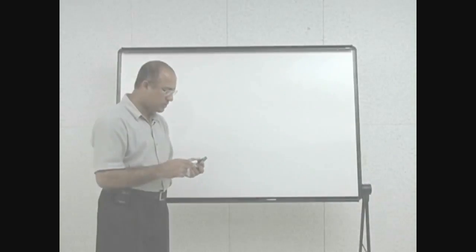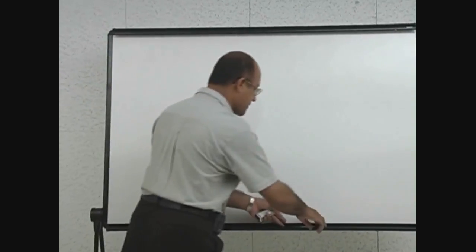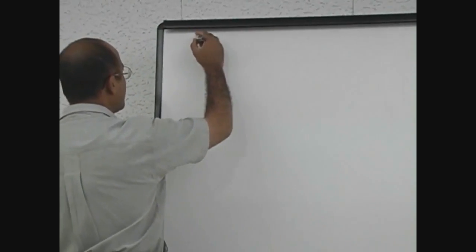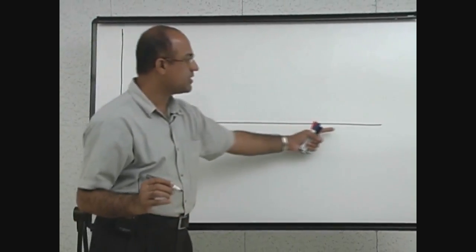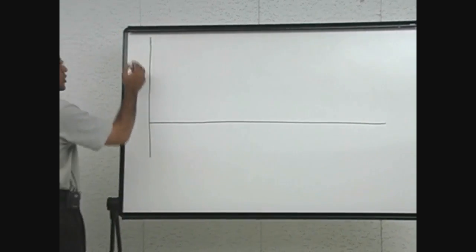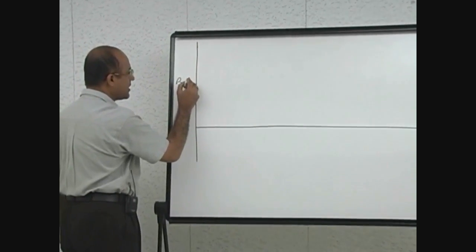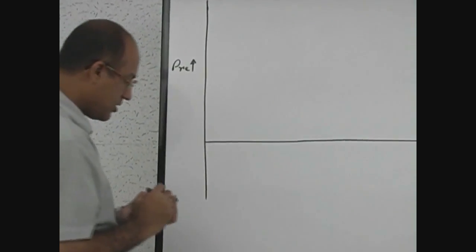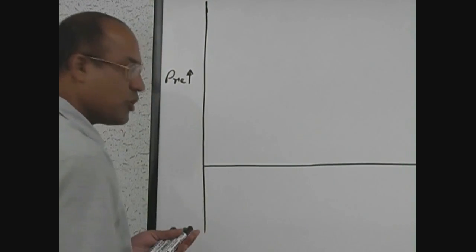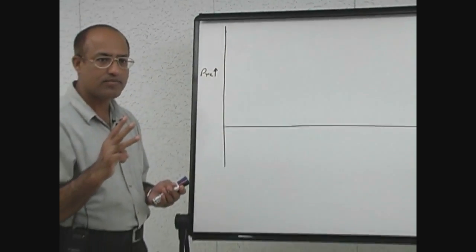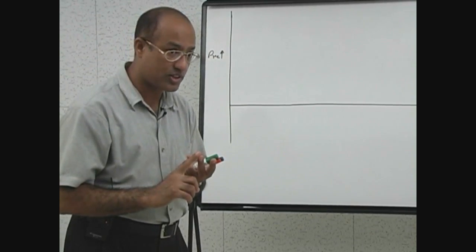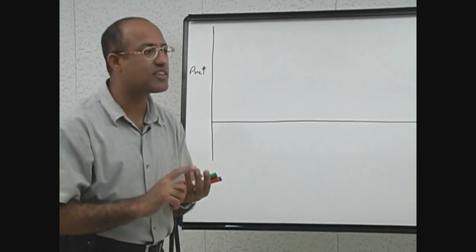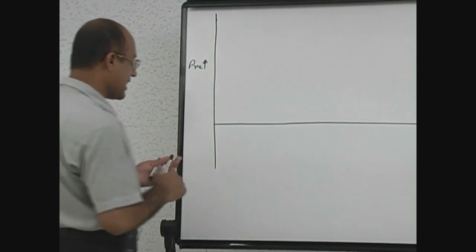We will now present the cardiac cycle as a graph. The horizontal line displays the time scale and the vertical line shows pressure changes. There are three parameters to examine: pressure activity in the atrium, pressure activity in the ventricle, and pressure activity in the aorta.